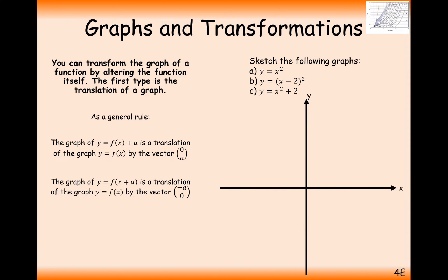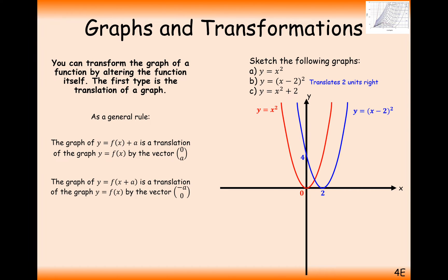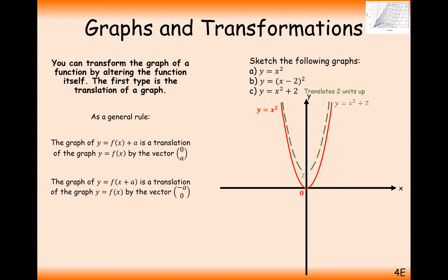Here are a couple of basic graphs we should be able to draw following these rules. Here's our standard f(x) = x² graph. The first thing we're going to draw is (x − 2)². We're taking away 2 inside the bracket — so the transformation is the negative of minus 2, which is positive 2 — this moves it right by 2. And for x² + 2, the plus 2 is outside the brackets, so we move that up by 2.